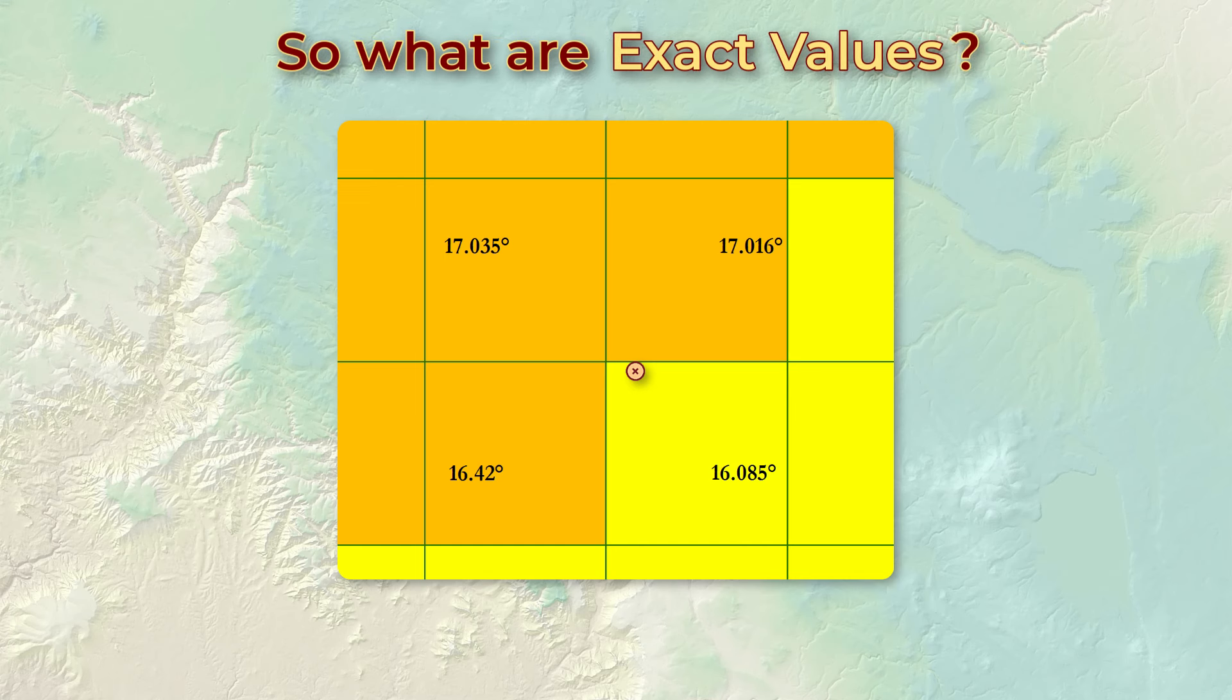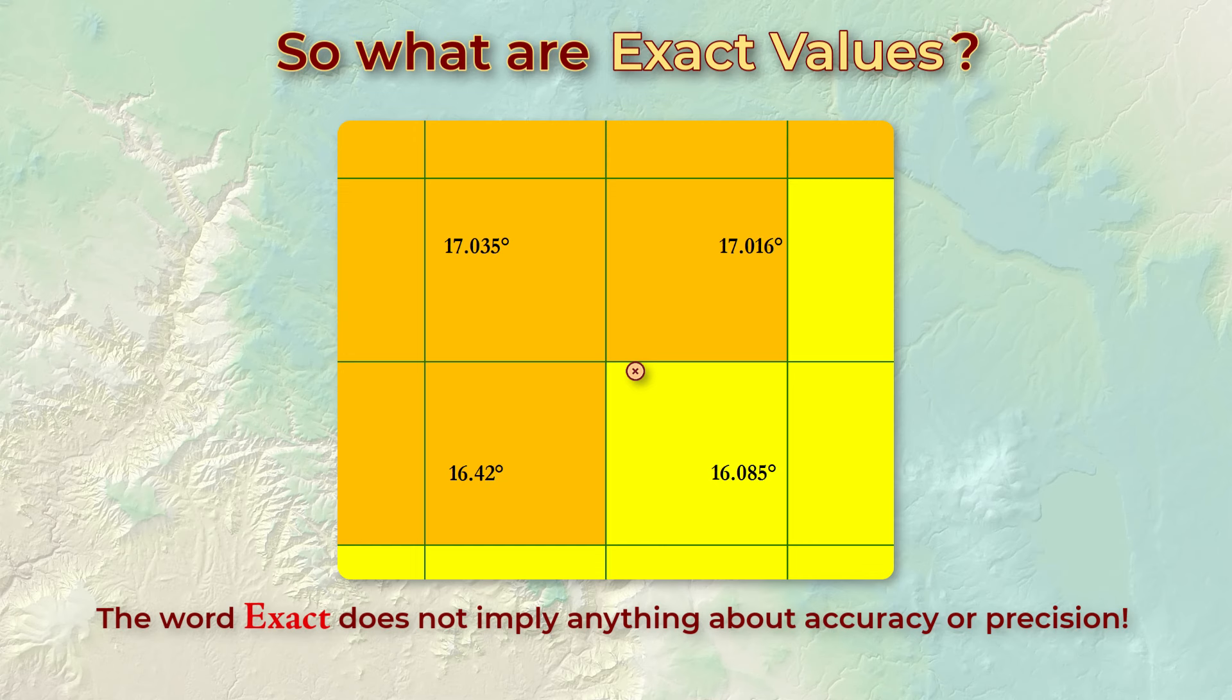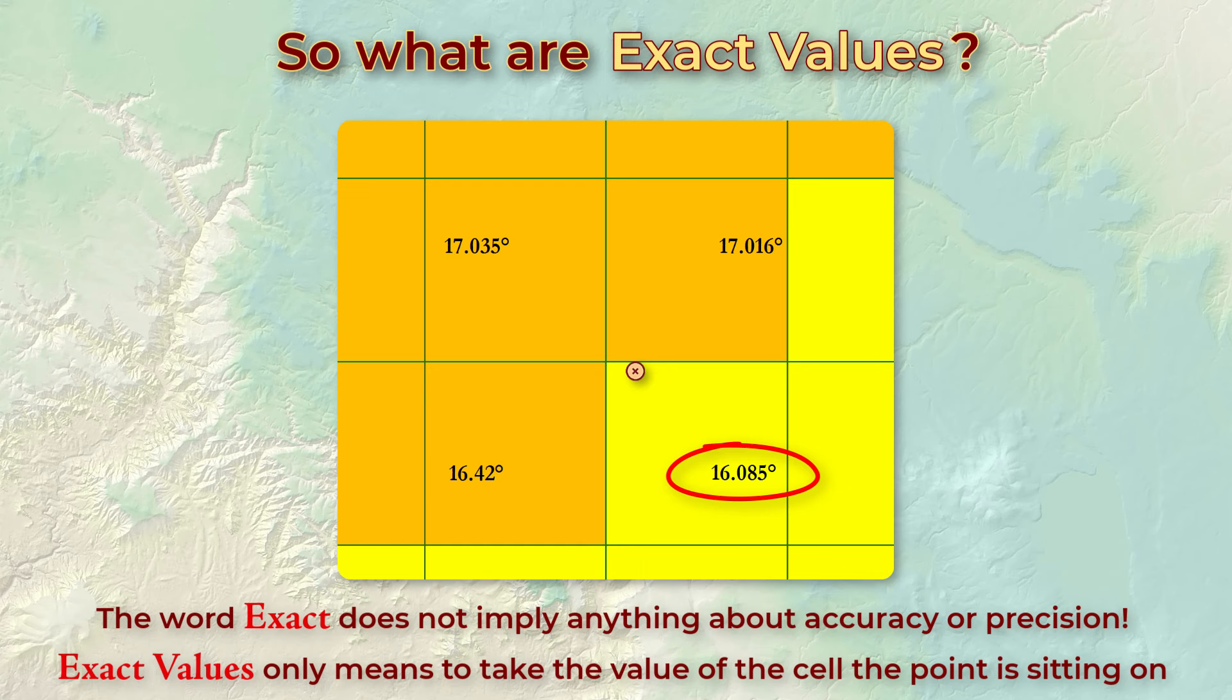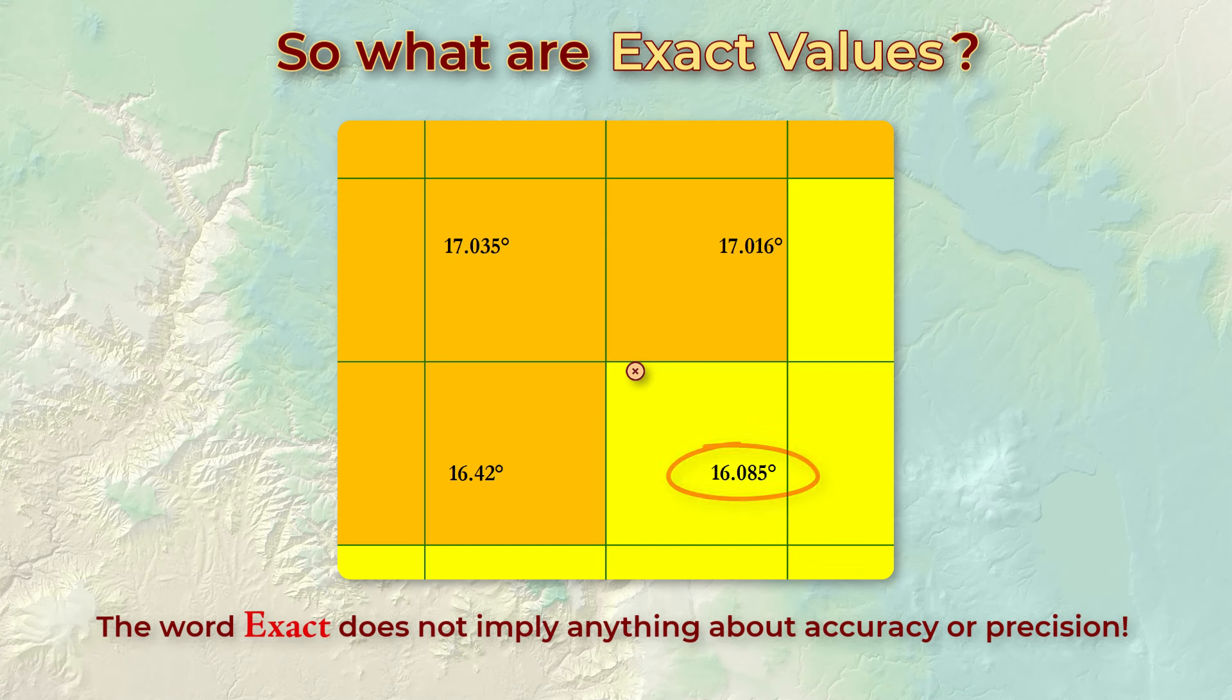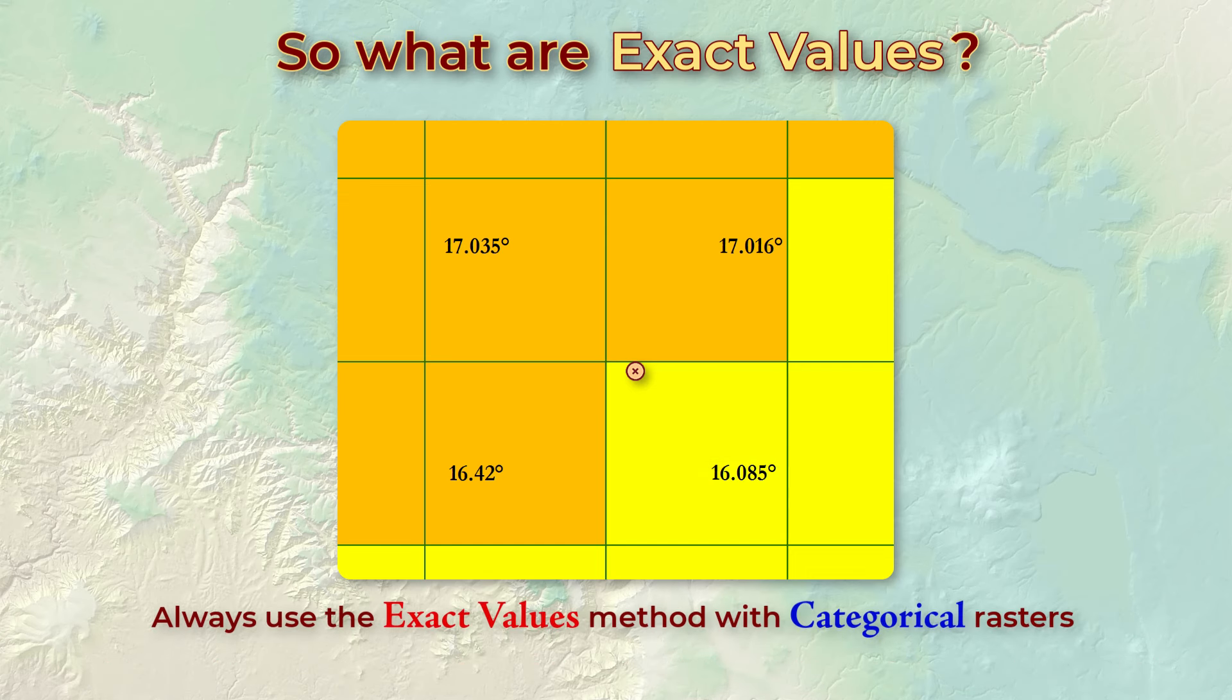So when are exact values more appropriate? Well, the word exact is a little misleading. It does not mean that the value is more accurate or more precise. It only means that you take the value of whatever cell the point is sitting on. Exact values are always more appropriate when cell values can't be averaged.